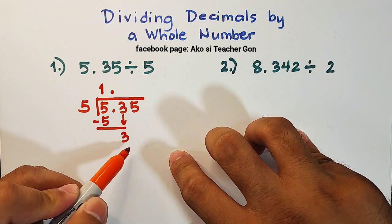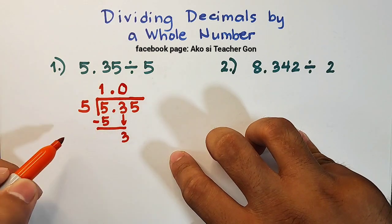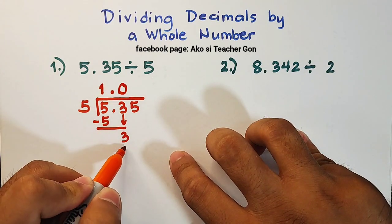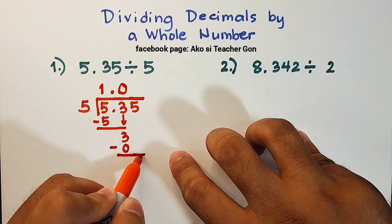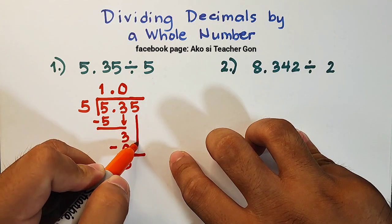So let's continue. We have 3 divided by 5, that is equal to 0. Next, 0 times 5, that is equal to 0. And then, subtract these numbers. So we have now 3 minus 0 is 3. And then bring down 5.